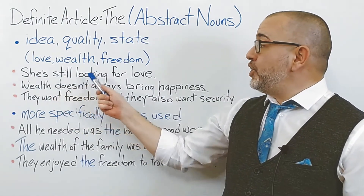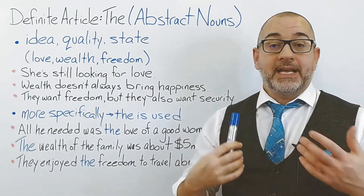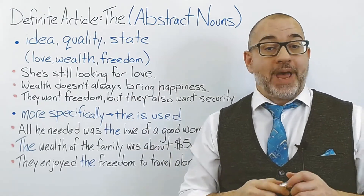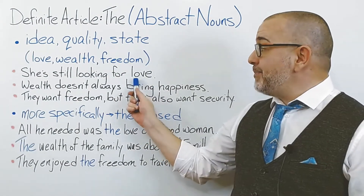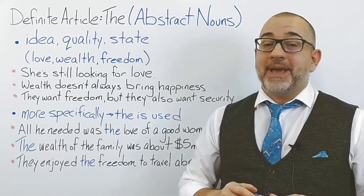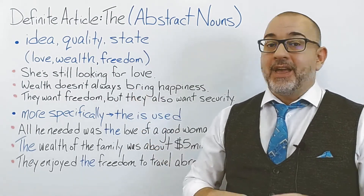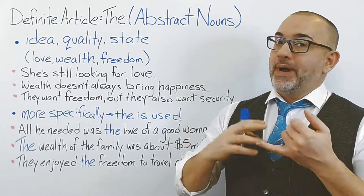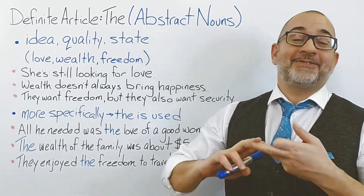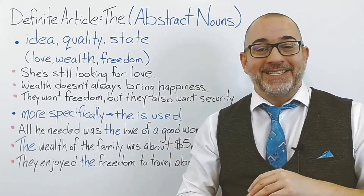She's still looking for love. In this sentence, love is the abstract noun. It is abstract because we don't have very many details about this noun. We don't know what kind of love, love from who, love from where. Again, it's an abstract noun.